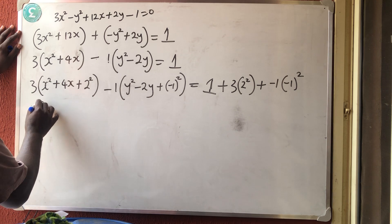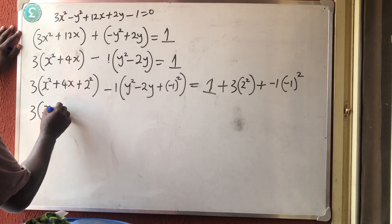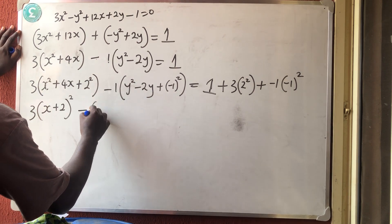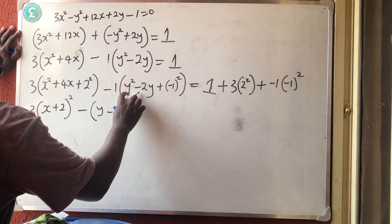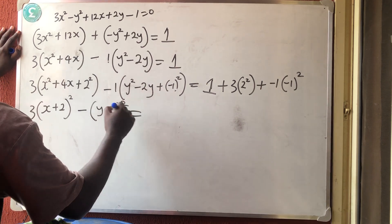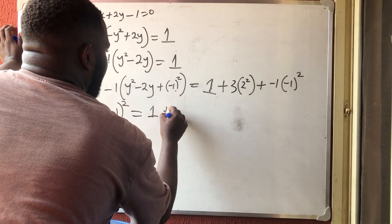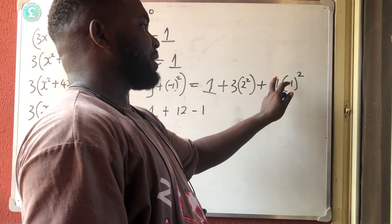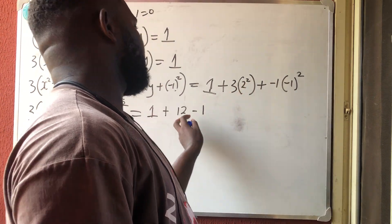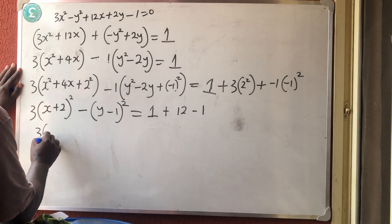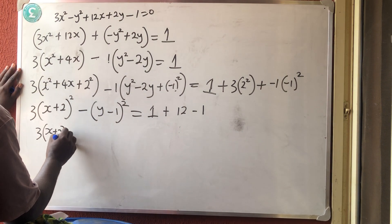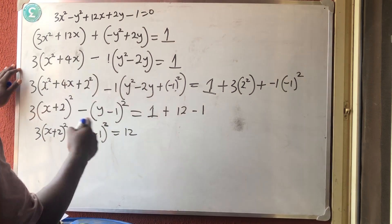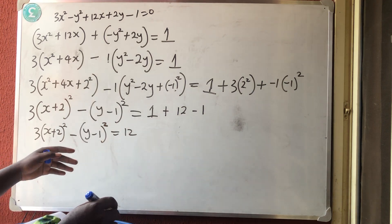After completing the square: 3(x + 2)² − 1·(y − 1)² = 1 + 12 − 1. The right-hand side: (−1)² = 1, and 1×(−1) = −1; 2² = 4 and 4 × 3 = 12. So we have 3(x + 2)² − (y − 1)² = 12. Divide everything by 12 so the right-hand side equals 1.